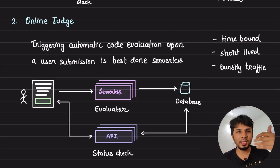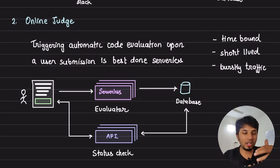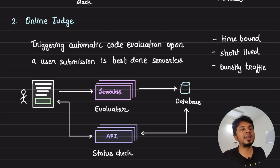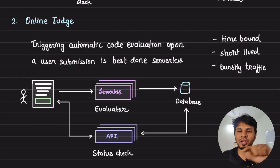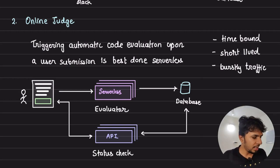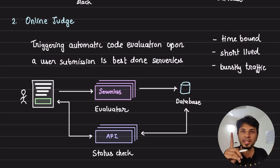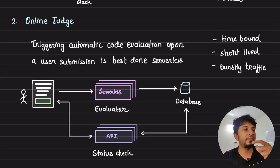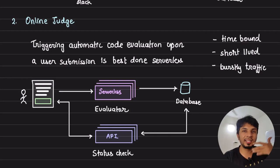You might have traditional EC2-based API servers for the status-check API that users poll, but the core evaluation of submissions is very well modeled on serverless. You don't care how many submissions happen per minute — serverless will automatically scale out. At 3 AM with only one user submitting, you're only billed for that one person. The traffic is bursty, the scale is unpredictable, and execution is time-bound — making online judge one of the most suitable serverless use cases.